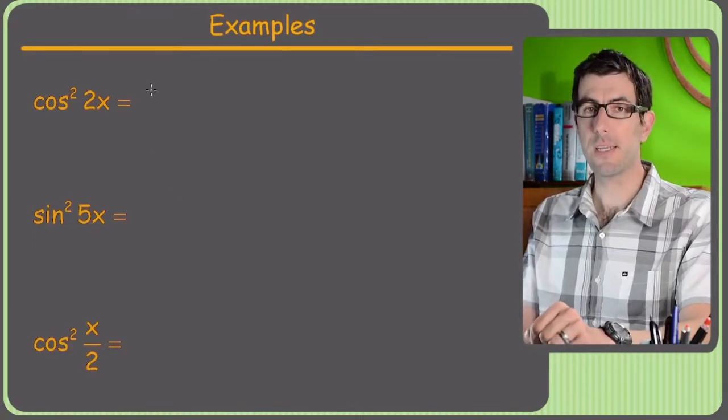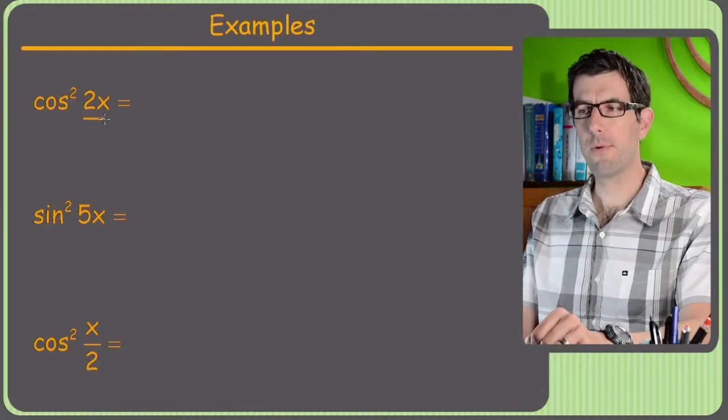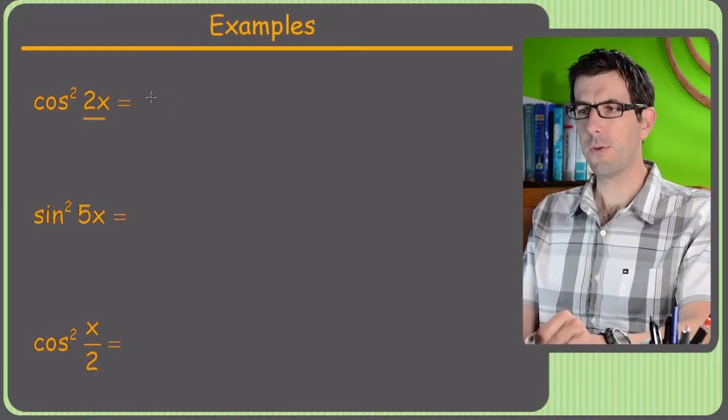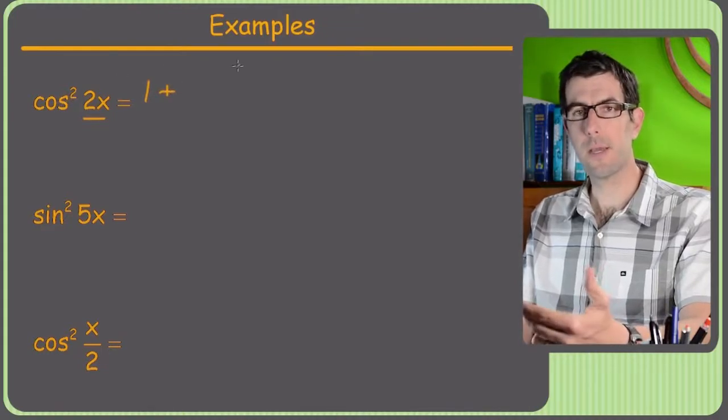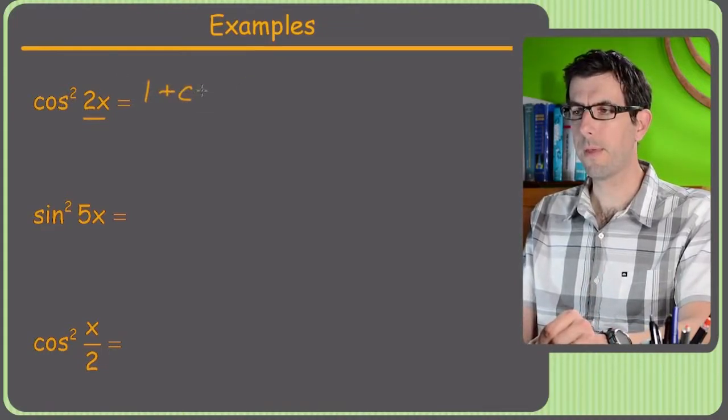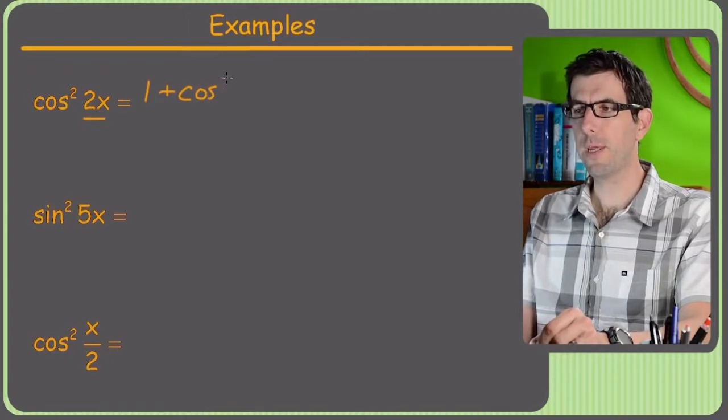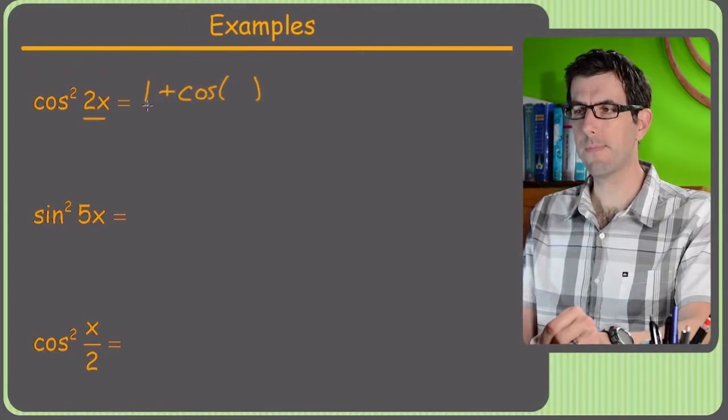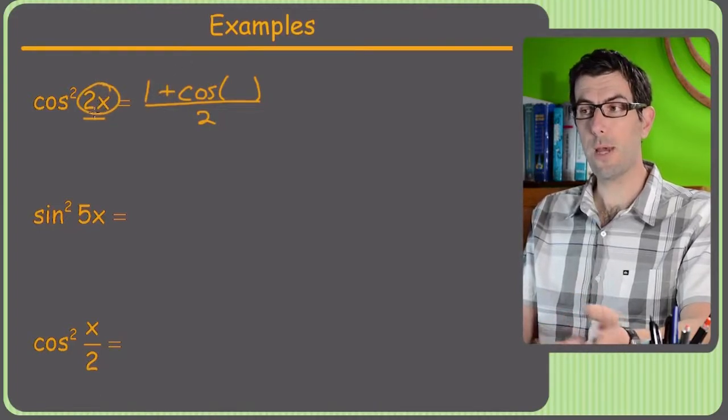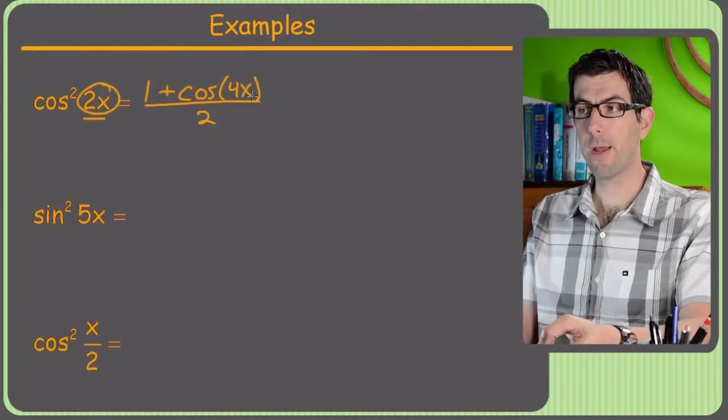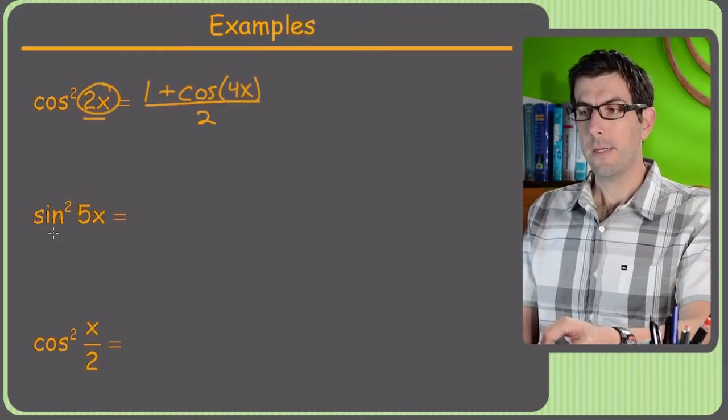So the only thing that's confusing is what do you put here versus there? So this is cosine, which, remember, is going to have the plus sign because I figure cosine leads to cosine. They're the same thing. Now the question is what to put here in the parentheses behind cosine. And the answer is double this. So this is 2x. This gets a 4x. Sine squared 5x.